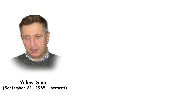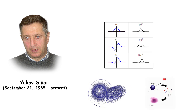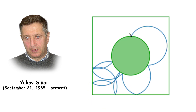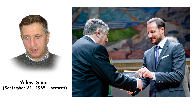Yakov Sinai is a Russian mathematician noted for his work in dynamical systems, statistical mechanics, and mathematical physics. He introduced the concept of Sinai's billiards, a model for chaotic motion, and developed the Kolmogorov-Sinai entropy, a measure of the complexity of dynamical systems. Sinai was awarded the Abel Prize in 2014 for his groundbreaking work.